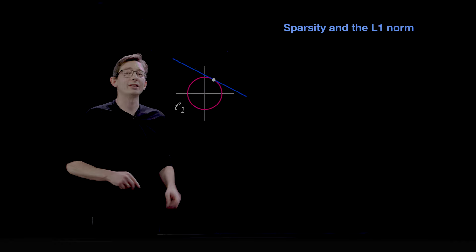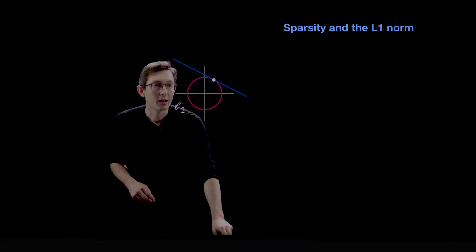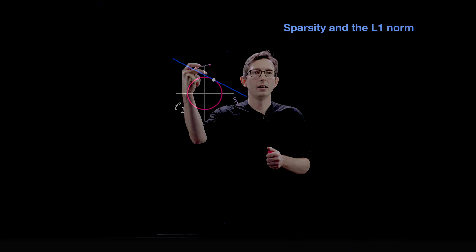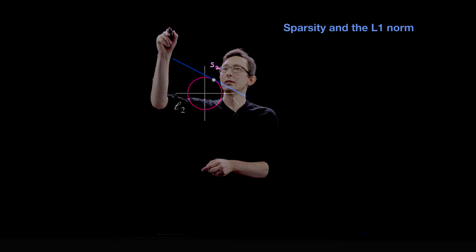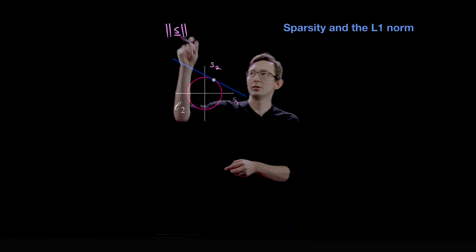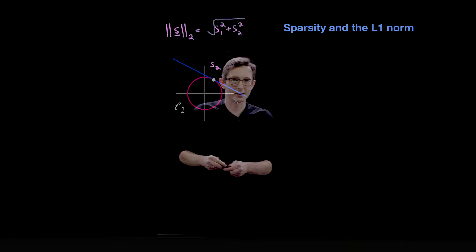I'm going to start with the L2 norm, which you are familiar with. In this example I have two coordinates — let's call them s1 and s2 — and the 2-norm is literally the 2-norm of this vector of coefficients s: the square root of s1 squared plus s2 squared.